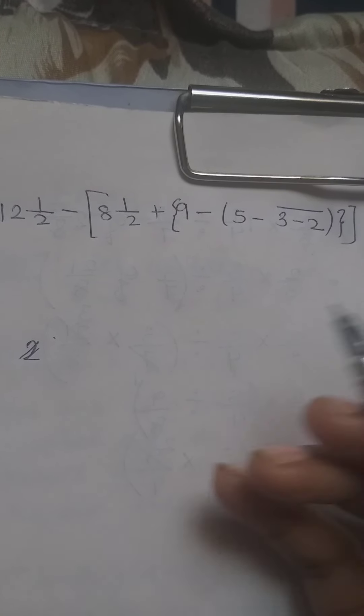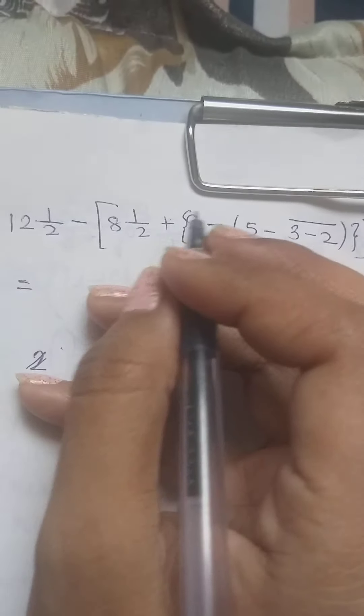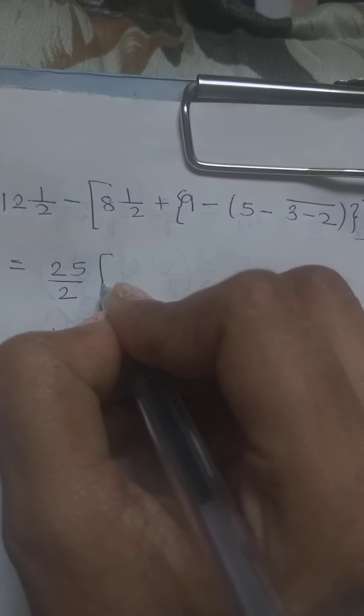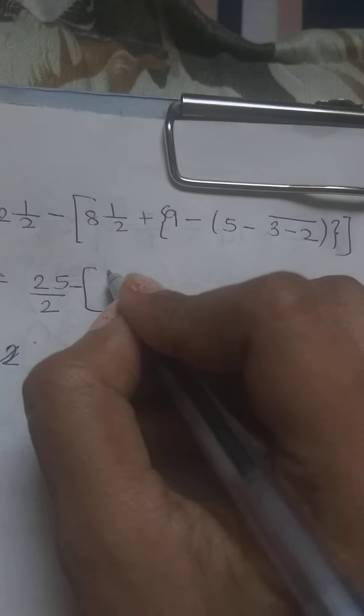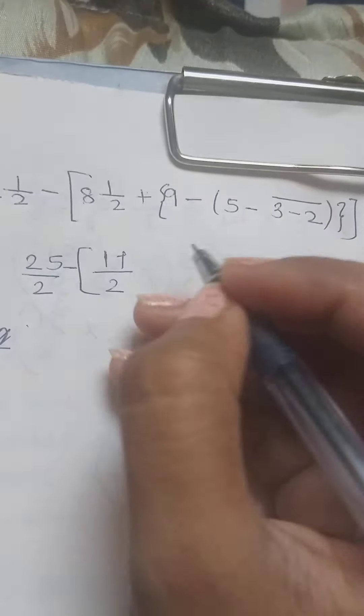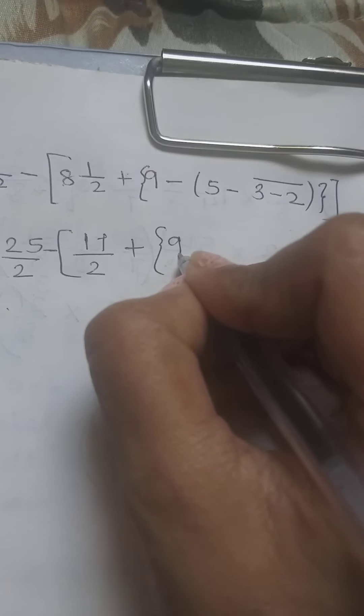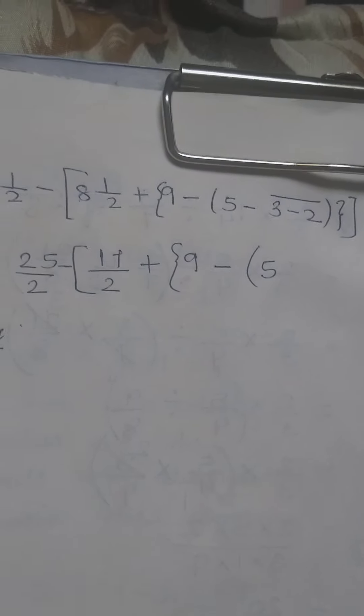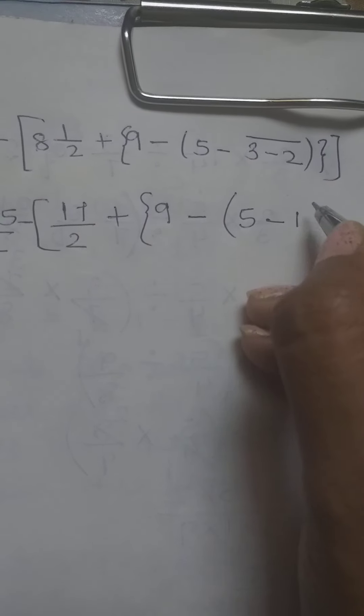Next, question number 5: 12½ − 8½ + {9 − (5 − 3̄−2̄)}. First convert mixed fractions to improper: 12½ = 25/2 (since 12×2+1=25), and 8½ = 17/2 (since 8×2+1=17). Now firstly we solve the bar bracket: 3 − 2 = 1, so the bar bracket goes off. Then inside the circular bracket: 5 − 1 = 4, bracket goes off.